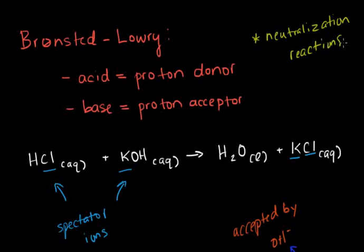Neutralization reactions are so named because we begin with a highly acidic compound and a highly basic compound and end with water — water with a pH of 7, neither acidic nor basic. We take something with highly extreme acidic and basic properties and essentially produce a neutral product.